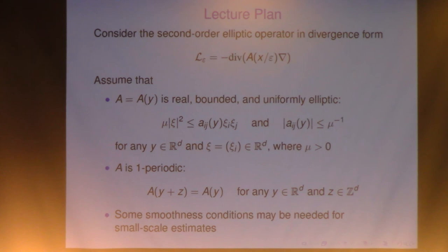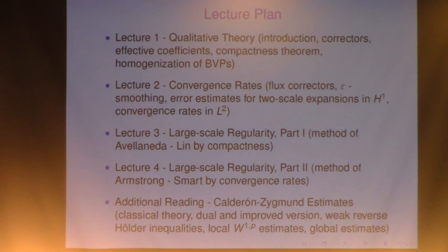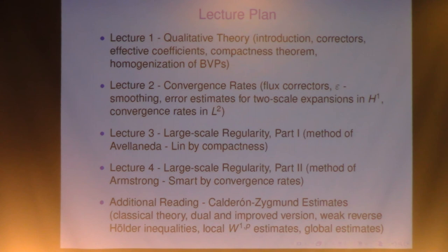So here's the plan. Today, we're going to talk about the qualitative theory. I already gave an introduction. And then we're going to talk about correctors, effective coefficients, effective operator, compactness theorem, and also prove the homogenization of boundary value problems, Dirichlet and Neumann problems. So that's the qualitative theory here.